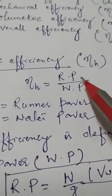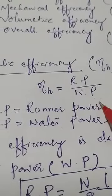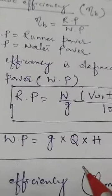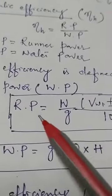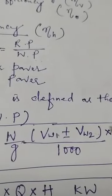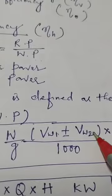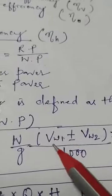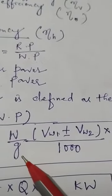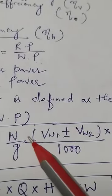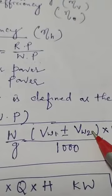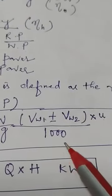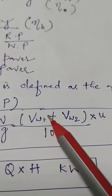Hydraulic efficiency: runner power divided by water power (RP / WP). The runner power formula is actually the formula of work done: (W/g) × (V_w1 ± V_w2) × u / 1000, where W/g is mass, V_w1 and V_w2 are whirl velocities, u is blade speed, and dividing by 1000 converts watts to kilowatts.